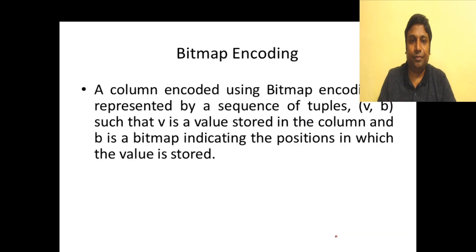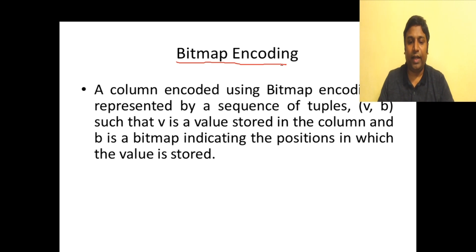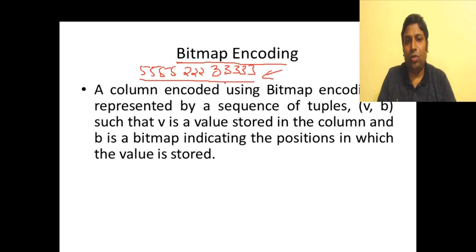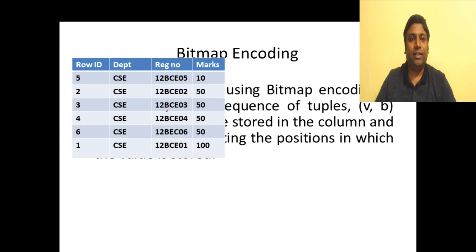Now let's look at bitmap encoding. Bitmap encoding is useful for columns where data repeats but may not be consecutive and may not be sorted. For instance, you can have fours, then fives, then twos, then threes — unsorted but with repeated values. You can apply bitmap encoding for encoding such repetitive data.